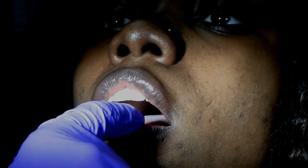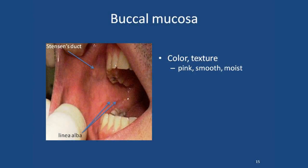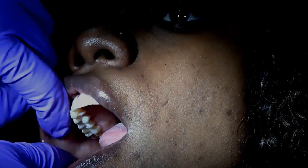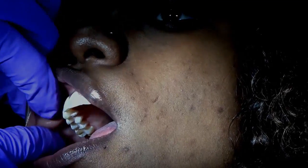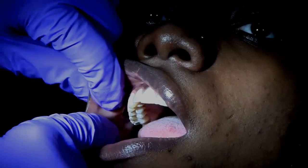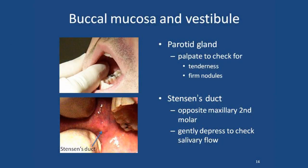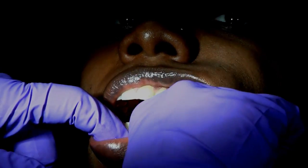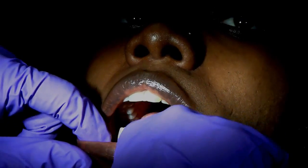From there we move into the buccal mucosa and look for any obvious lesions. It should be smooth, pink, glistening, and moist. Going up and having the patient turn slightly, we can see Stenson's duct — the exit to the parotid gland. We can feel that between our fingers and make sure there's no tenderness or swelling. Be sure to check both sides of the buccal mucosa, seeing and feeling as much as possible.